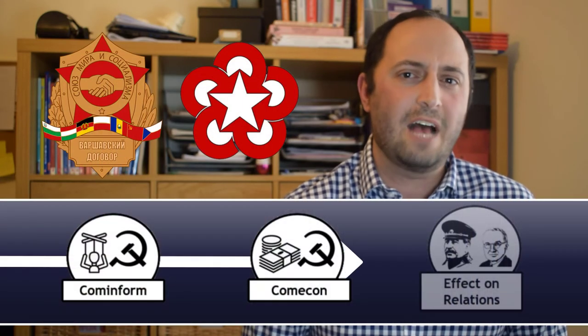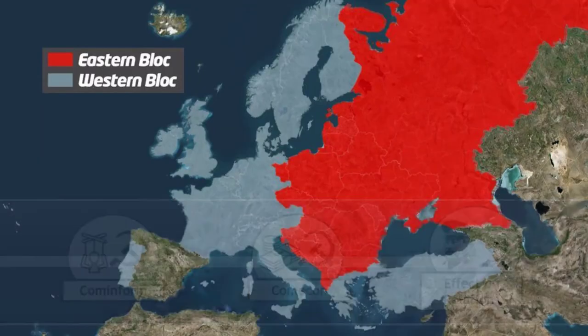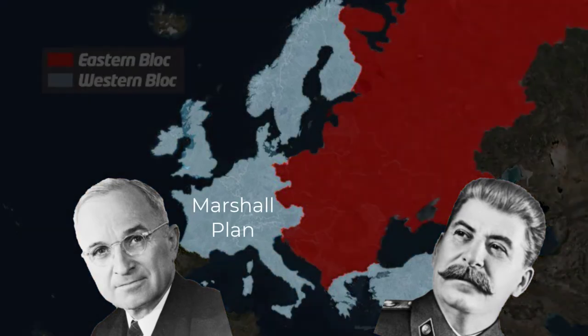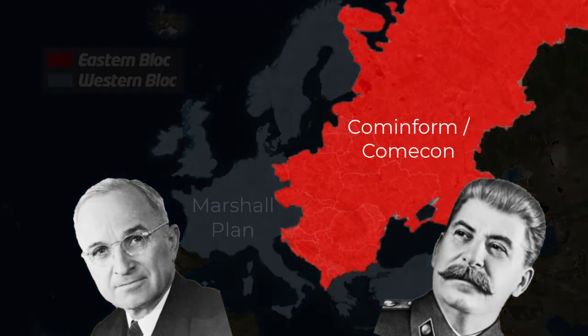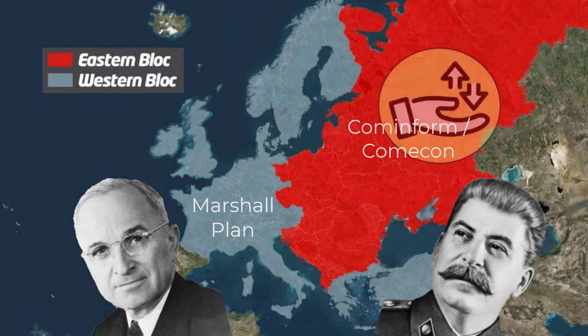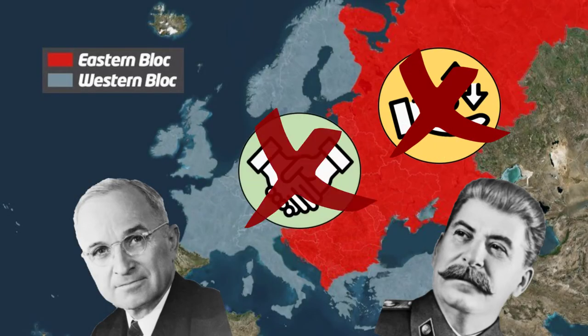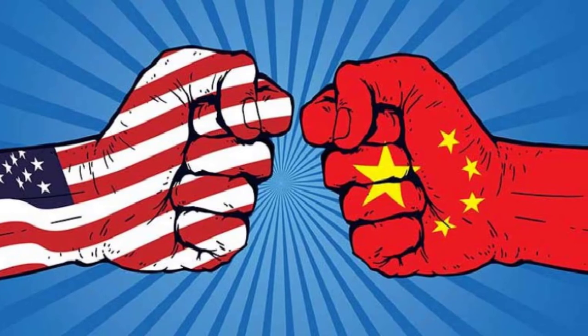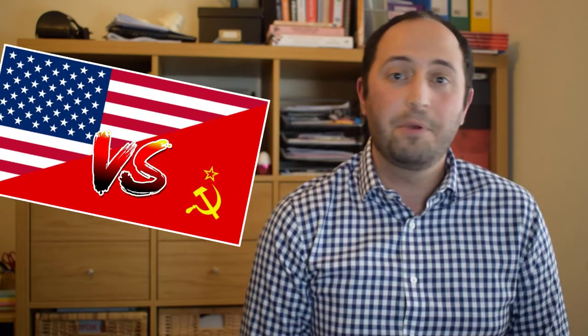But for now, Stalin's reaction to the Truman Doctrine and the Marshall Plan was the creation of Cominform and Comecon. This created a much bigger divide: America had its supporters and influence over Western Europe, and the USSR now had its supporters and influence over Eastern Europe. There was to be no mixing, no interacting, no trading — it was East and it was West — with increased tension and mistrust building up further between the USA and the USSR. The biggest direct consequence was that Europe was now divided economically between East and West.